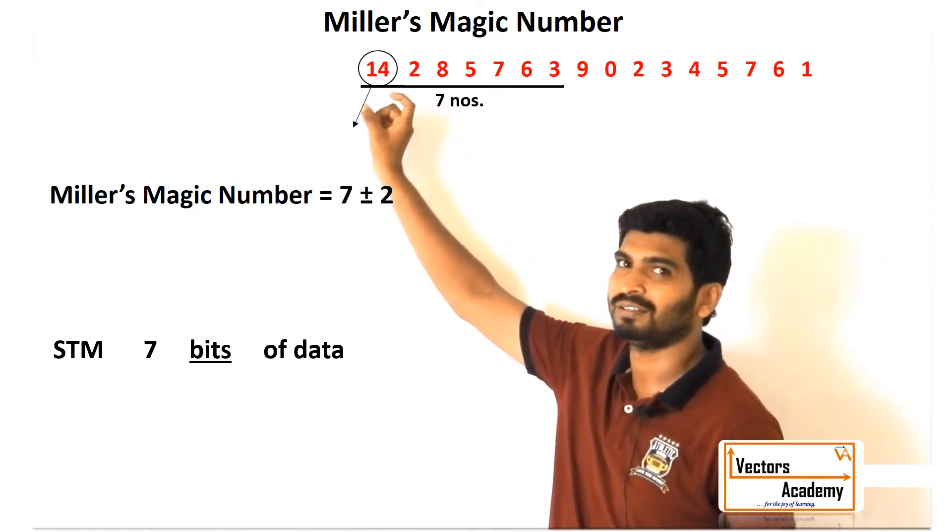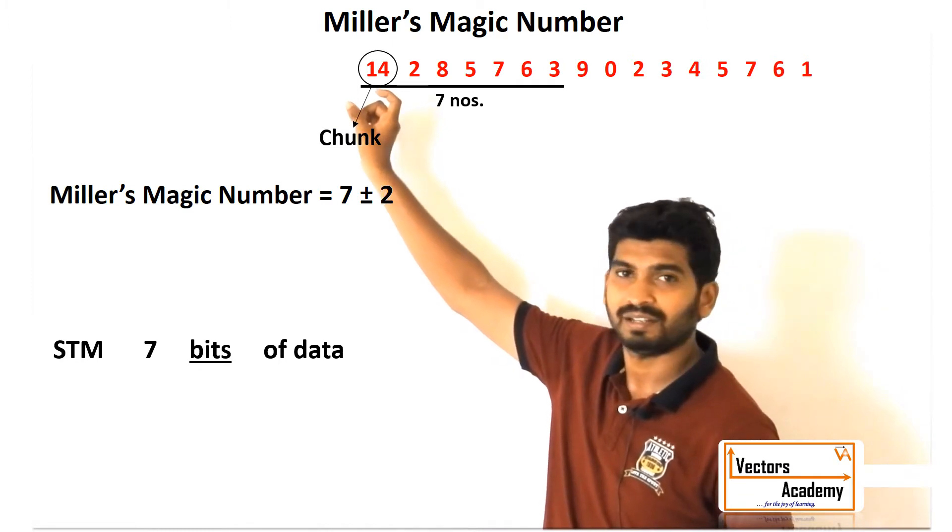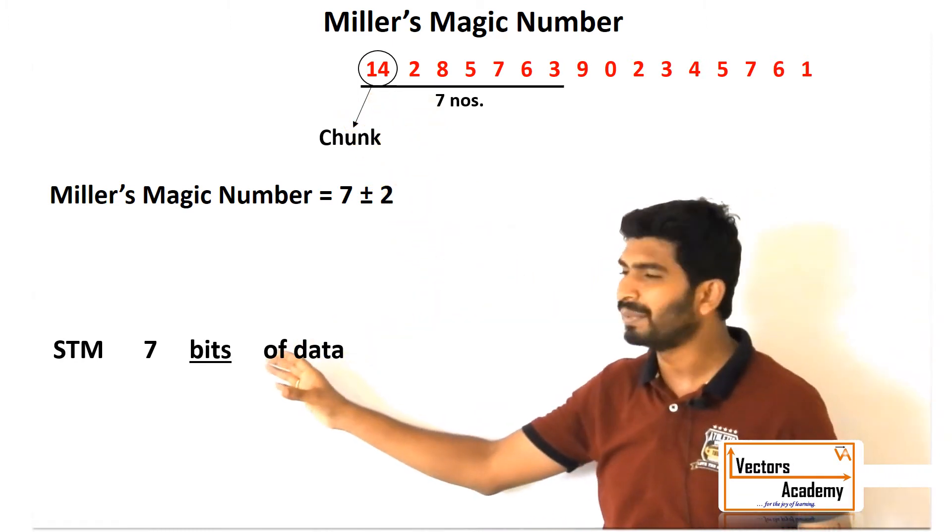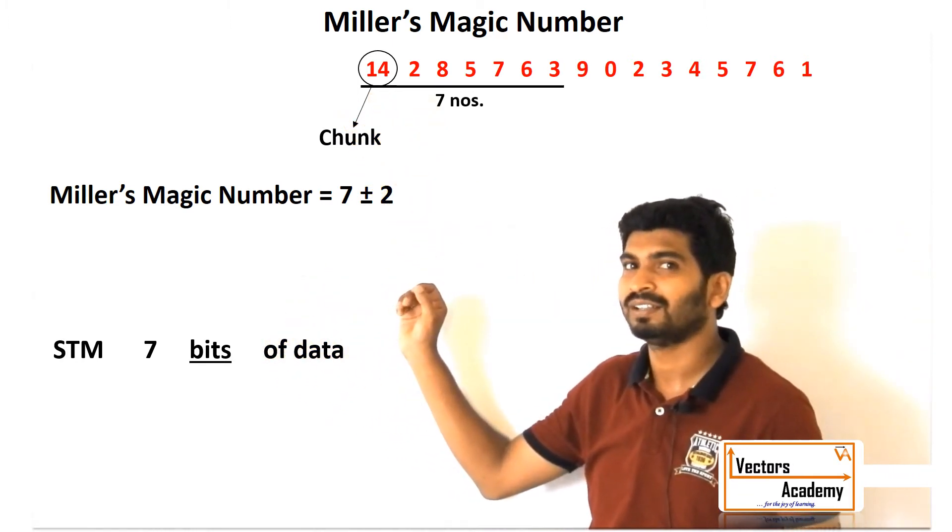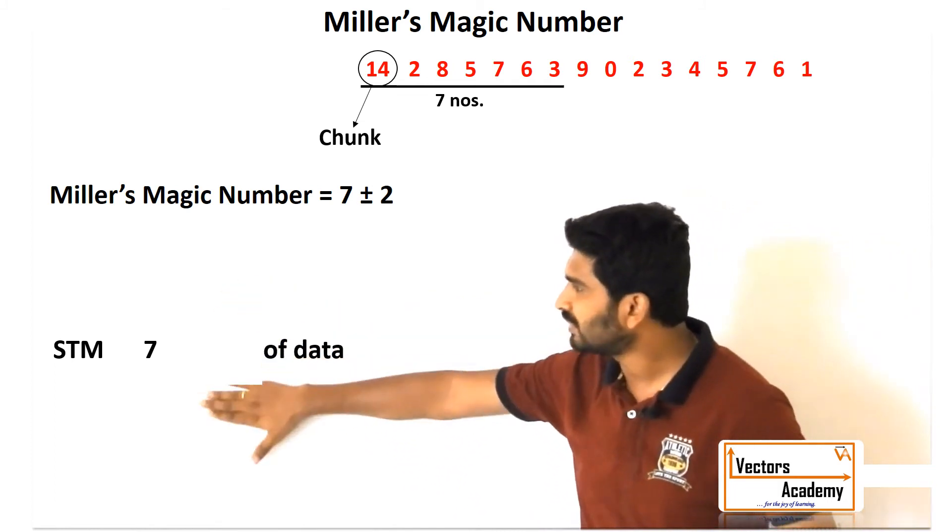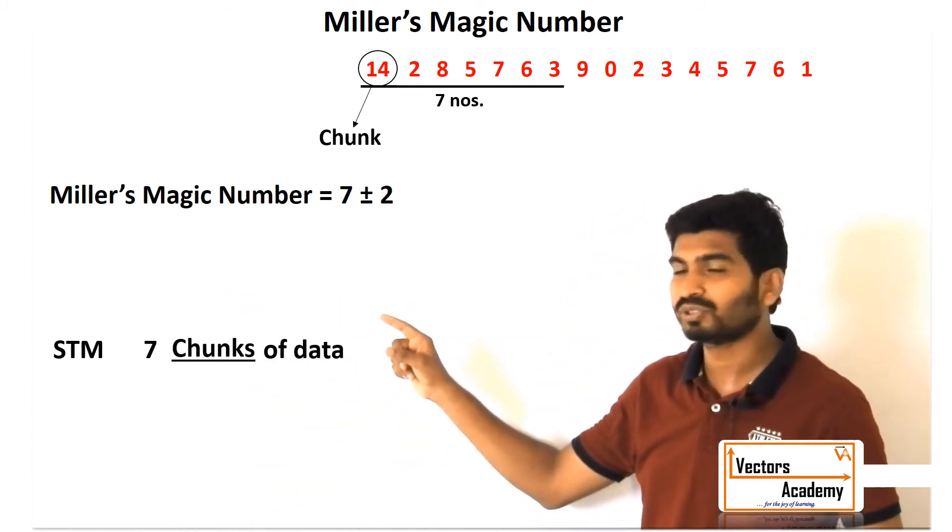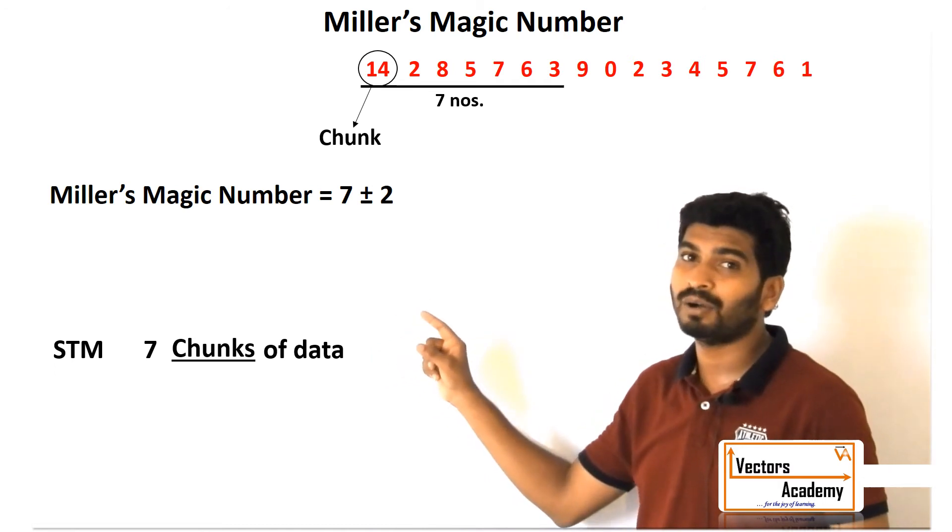So instead of seven bits, I can now remember eight bits of data. So actually, it comes to seven chunks of data—that is the amount of storage short-term memory has.